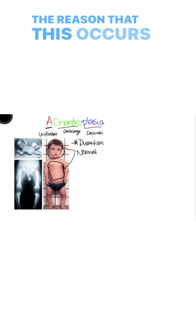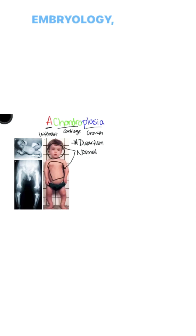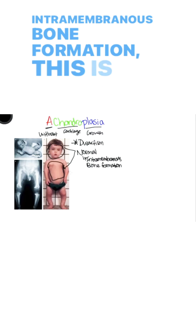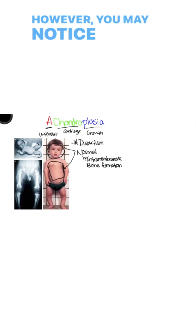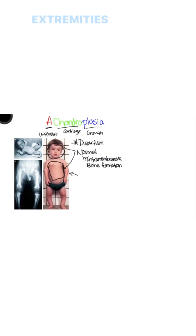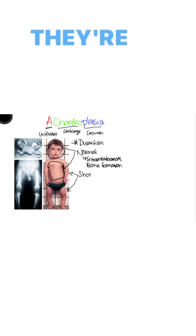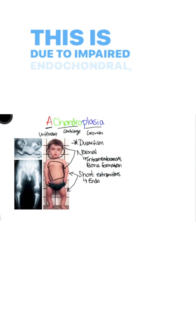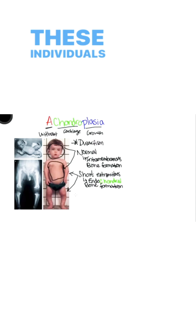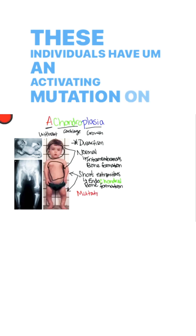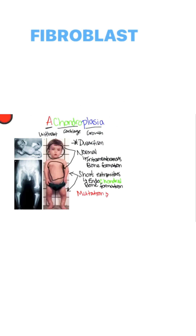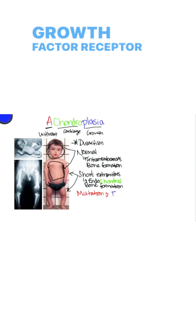The reason this occurs is, if you may recall from embryology, there are two types of bone formation: intramembranous bone formation, which is not affected. However, you may notice in these individuals that their extremities are shorter and not developed properly. This is due to impaired endochondral cartilage bone formation. These individuals have an activating mutation on the fibroblast growth factor receptor 3.